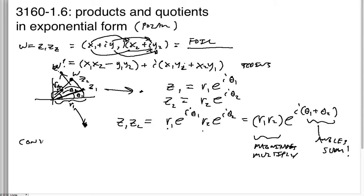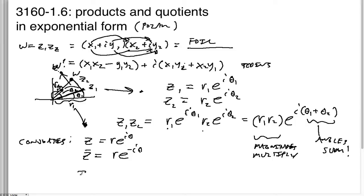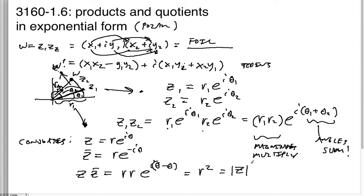What about conjugates? If z equals r·e^{iθ}, then z-bar equals r·e^{-iθ}. So z times z-bar becomes r times r times e^{i(θ−θ)}, which is always zero in the exponent, giving us r squared — exactly the magnitude of z squared, as expected.